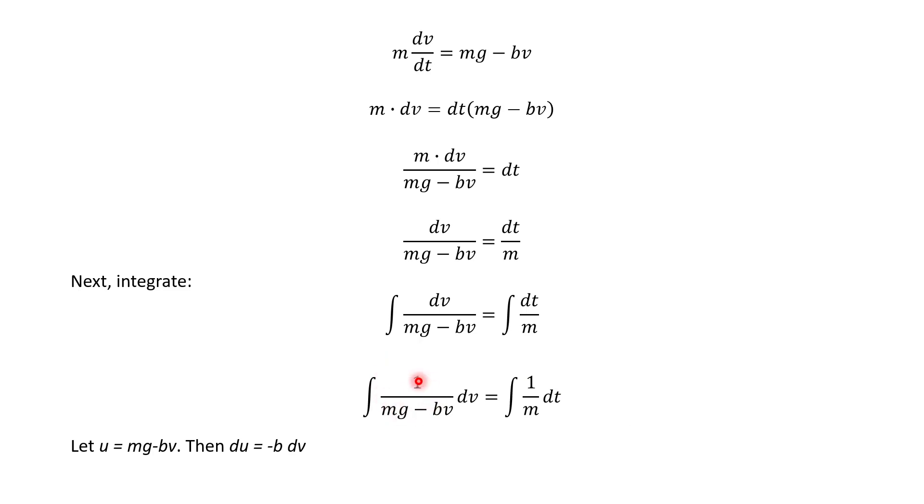And then we use our integration techniques that we've learned from the past. So on the left side, we actually need to use u substitution. So if we let the denominator equal u, and then if we differentiate it with respect to v, then mg is a constant, so the derivative would be zero.